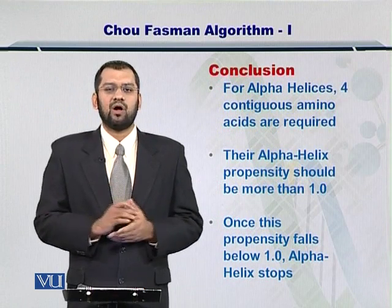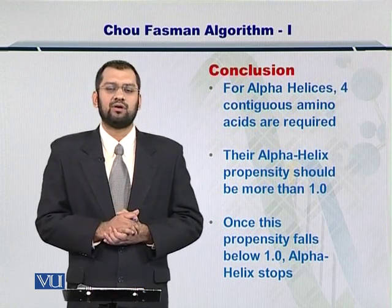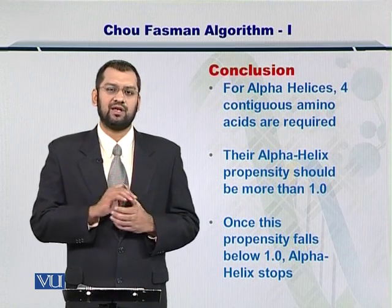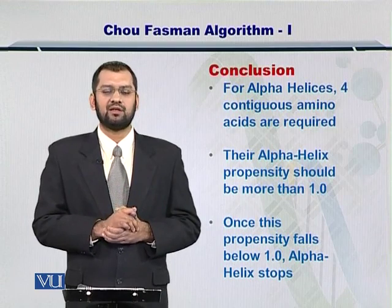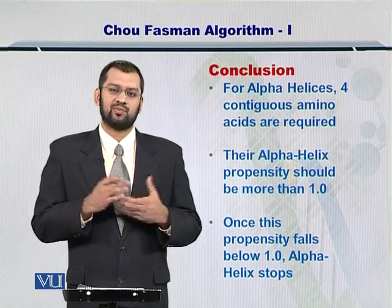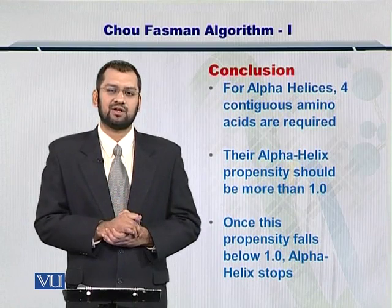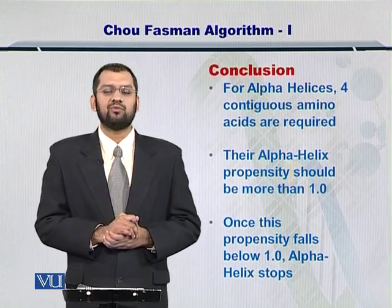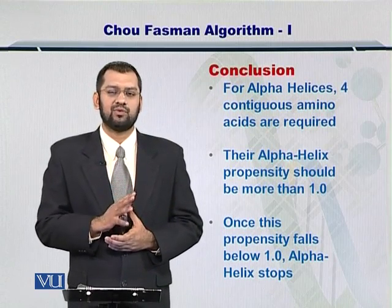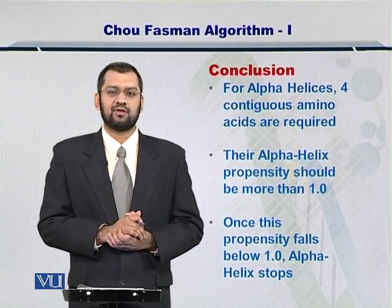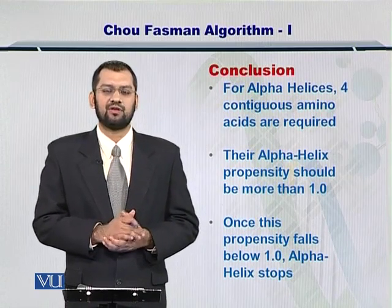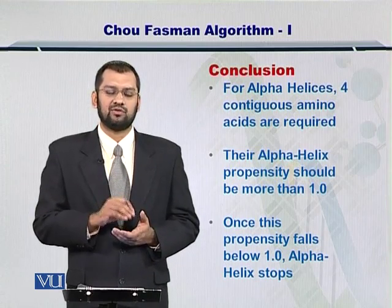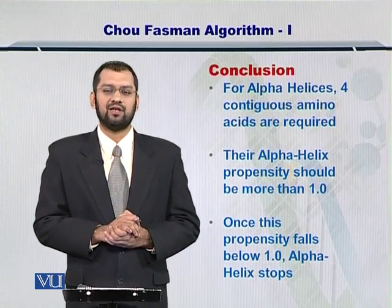In this way, the requirement that 4 amino acids are needed for one complete turn within the alpha helix is used in the Chou-Fasman algorithm towards predicting the secondary structure of the protein. Note that the propensity should be more than 1 for any 4 contiguous amino acids to be part of an alpha helix, and as soon as the overall propensity for any 4 contiguous amino acids drops below 1, that is the end of the alpha helix.